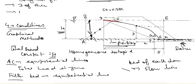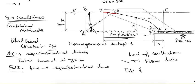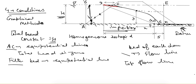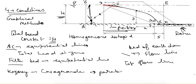Now we have three conditions: two equipotential lines and one flow line. We are missing the top flow line. It is clear that if the water level is up to a certain height, this top flow line will start somewhere near the upstream surface and end at some point on the filter bed.